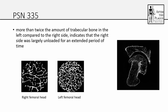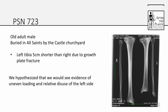Looking at the cross-sections, you can see that more than twice the amount of trabecular bone exists on the left side compared to the right. This is still overwhelming evidence that the right side was largely unloaded for an extended period of time. You can also see the gradual reduction of trabecular bone on the right side visually — everyone agrees there's a lot less on that side. The method works, so we're going to move on to our next individual.